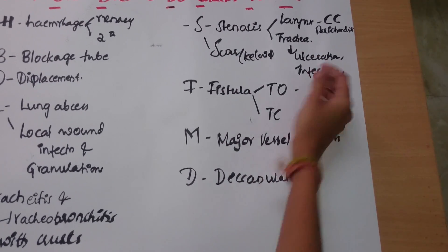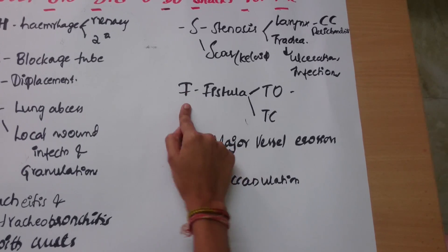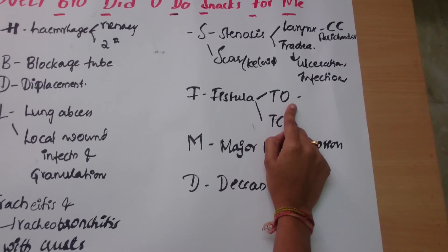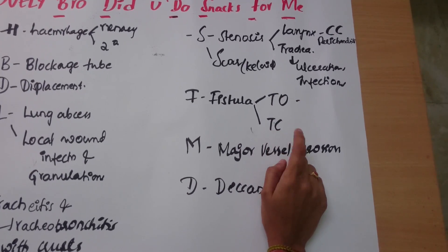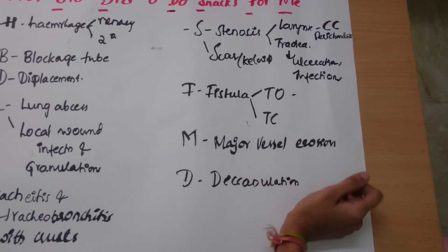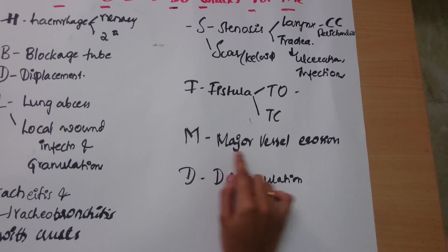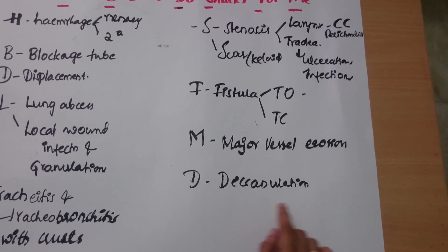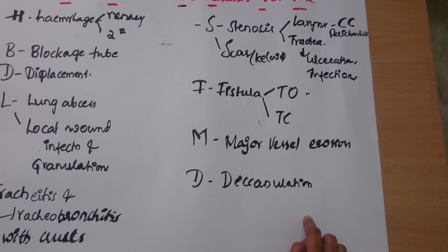Scar includes keloid and unsightly appearance. F for fistula — tracheoesophageal fistula and tracheocutaneous fistula. M for major vessel erosion, and D for decannulation.